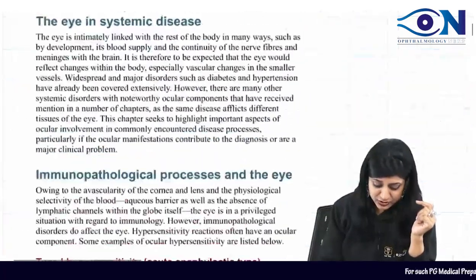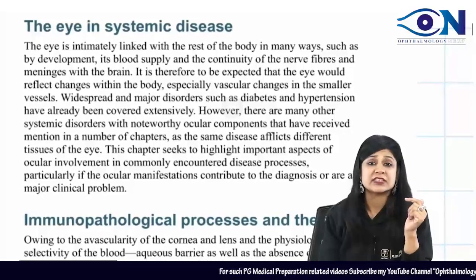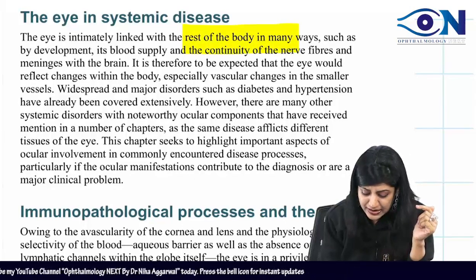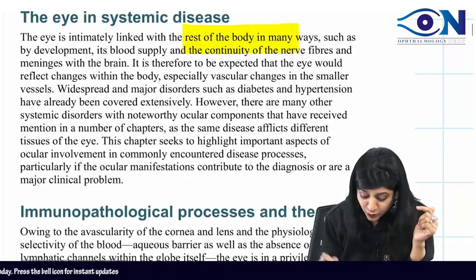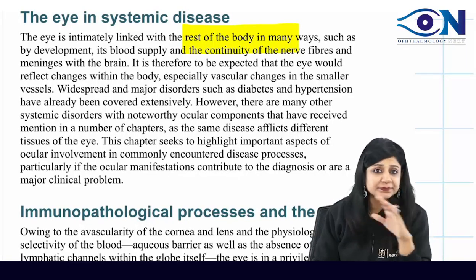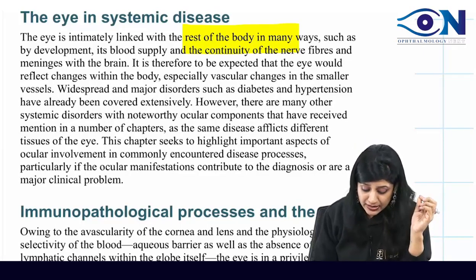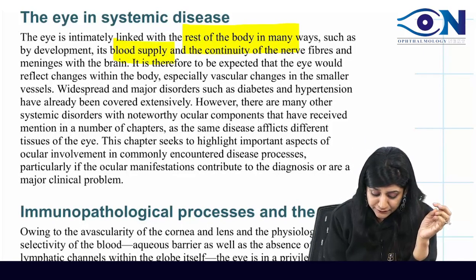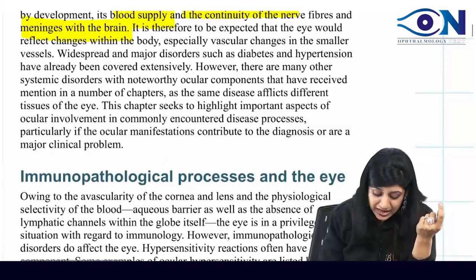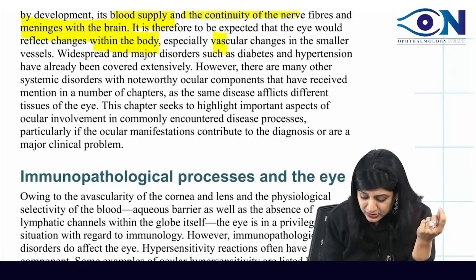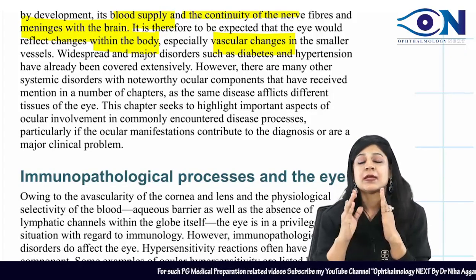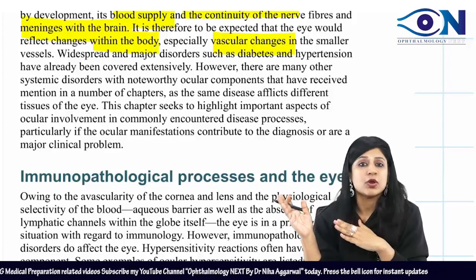The eye is intimately linked with the rest of the body in many ways. The eye is actually involved and connected with all the systems of the body — its blood supply, the continuity of nerve fibers, the brain, and the meninges. It is therefore expected that the eye would reflect changes within the body, especially the vascular changes. Whenever we see changes in the eye, we cannot take it independently; maybe there are changes going on throughout the whole body.